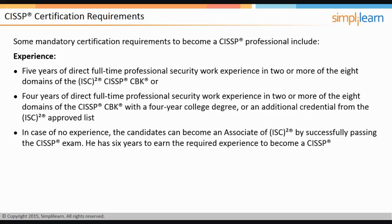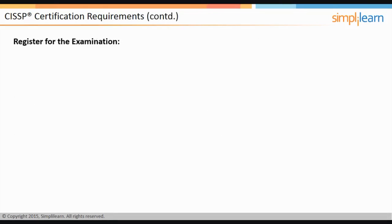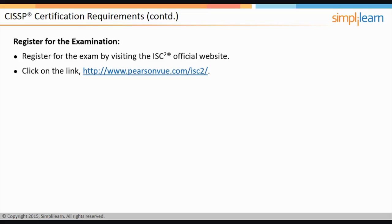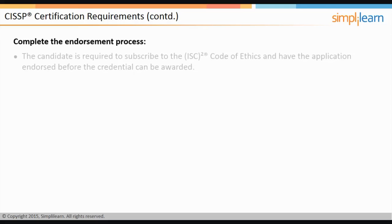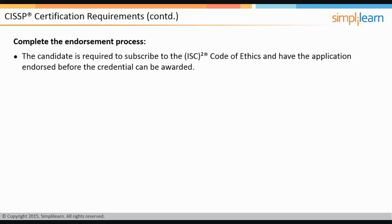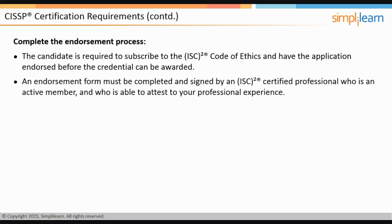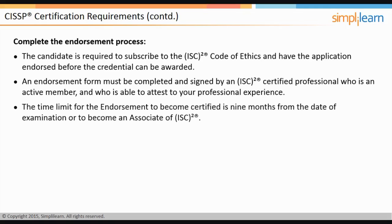An associate has six years to earn the required experience to become a CISSP. To register for the exam, visit the ISC² official website, click the exam registration link, create a user account, and select a Pearson VUE Testing Center for scheduling. After passing the exam, candidates must complete the endorsement process by subscribing to the ISC² Code of Ethics and having their application endorsed by an active ISC² certified professional.